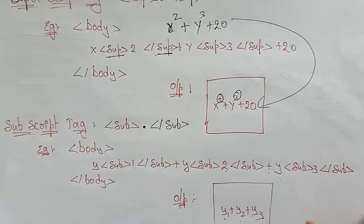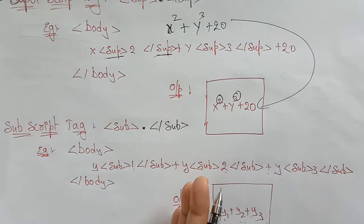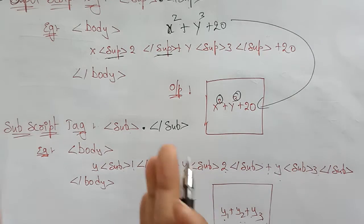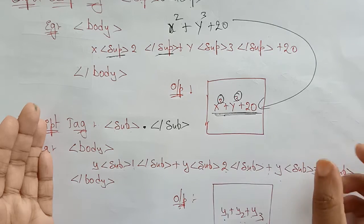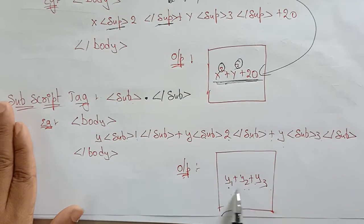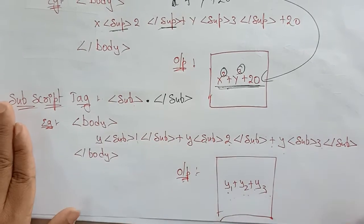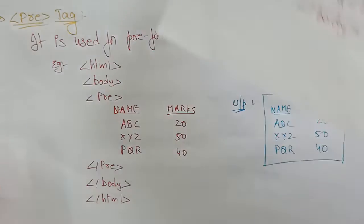If you want to represent content in mathematical form on a web page, you use superscript or subscript. You can't write these formats directly on a web page — you need to write the HTML code. Use superscript for power notation and subscript for lower index notation.